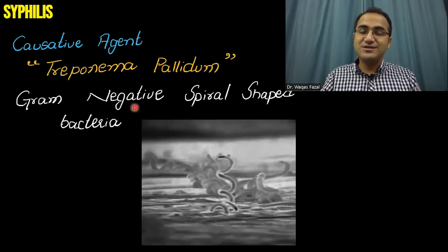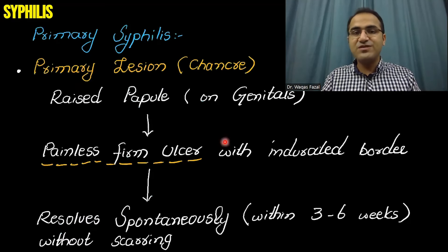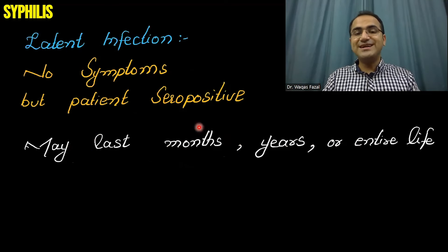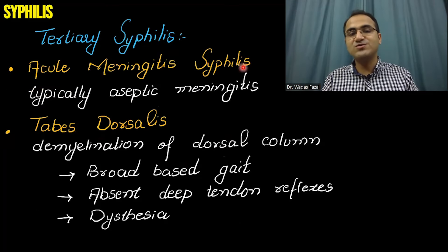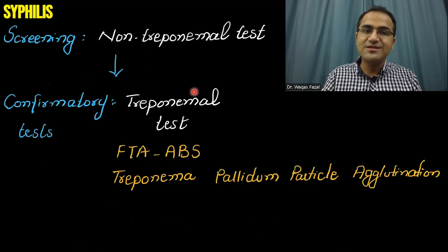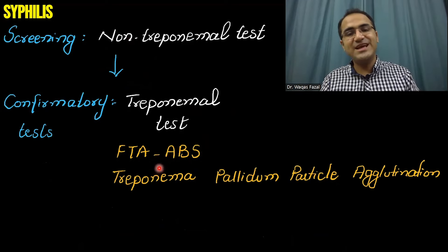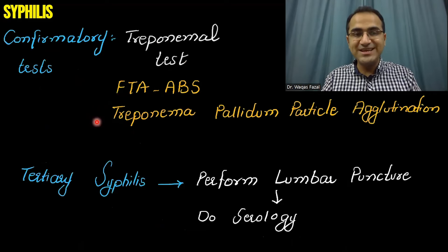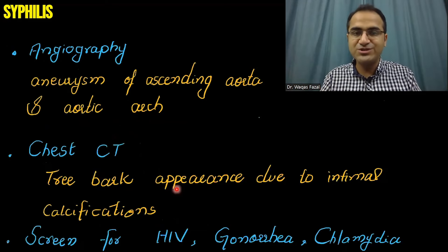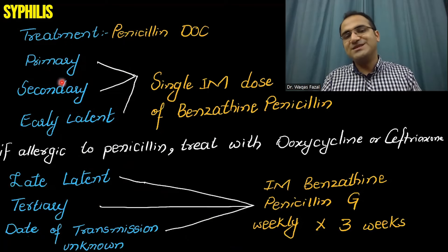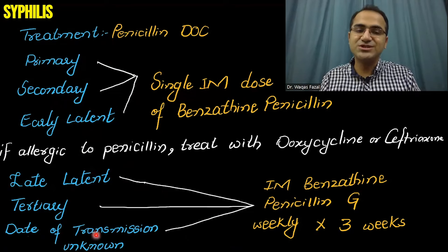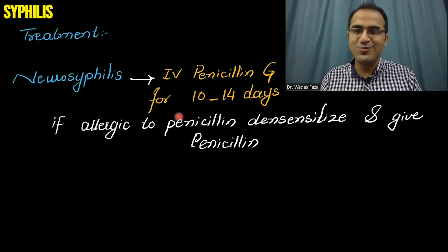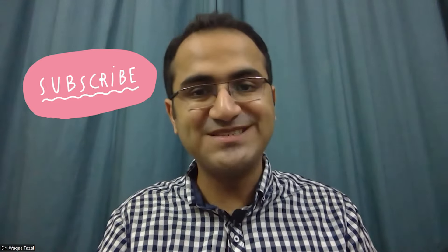In summary, we talked about Treponema pallidum, its transmission and pathophysiology, the stages of infection — primary chancre, secondary rash on palms and soles, latent infection (early and late latent), and tertiary syphilis with gummas, cardiovascular involvement, meningitis, and tabes dorsalis — as well as congenital syphilis and the Hutchinson triad. Screening is done with RPR and VDRL; confirmation with FTA-ABS; dark field microscopy for primary syphilis only; lumbar puncture for CNS involvement. Treatment is penicillin — single dose for early disease, prolonged course for late/tertiary/neurosyphilis, and the Jarisch-Herxheimer reaction may occur post-treatment.